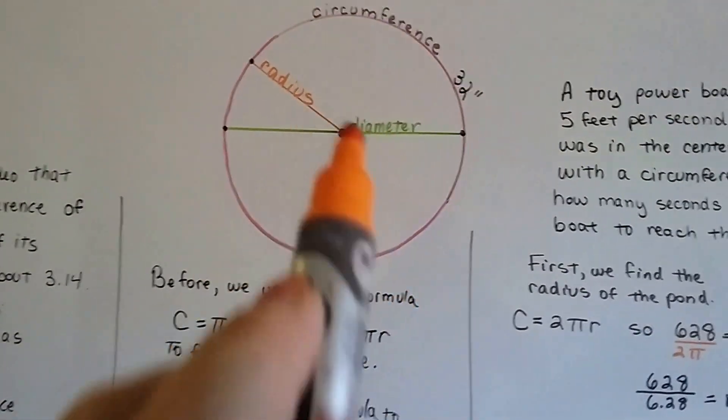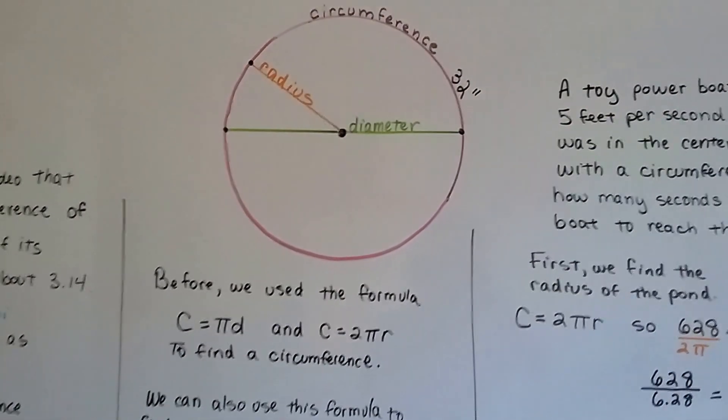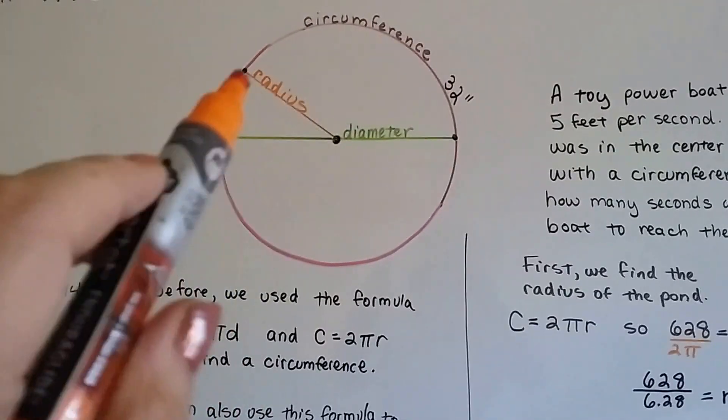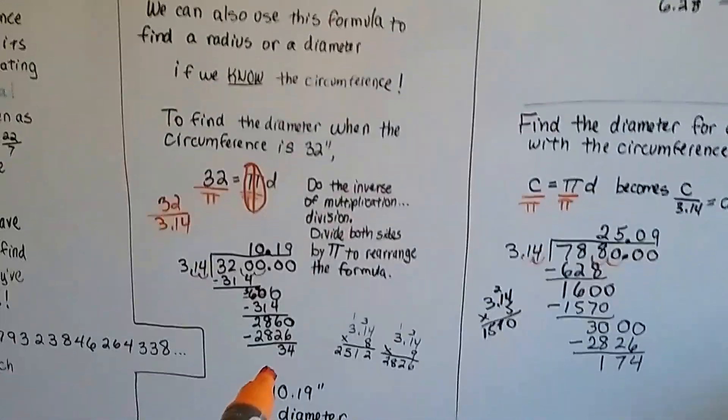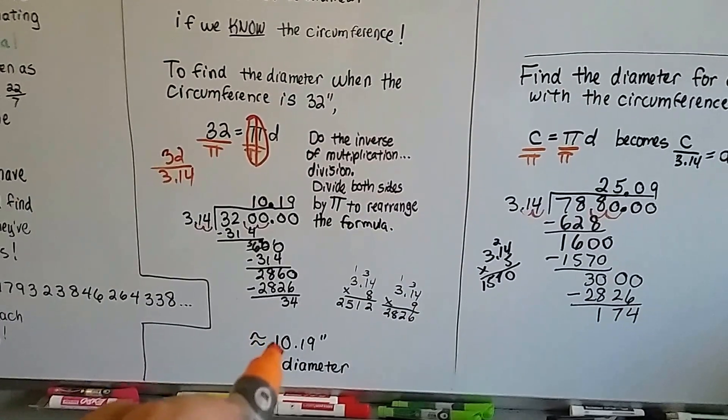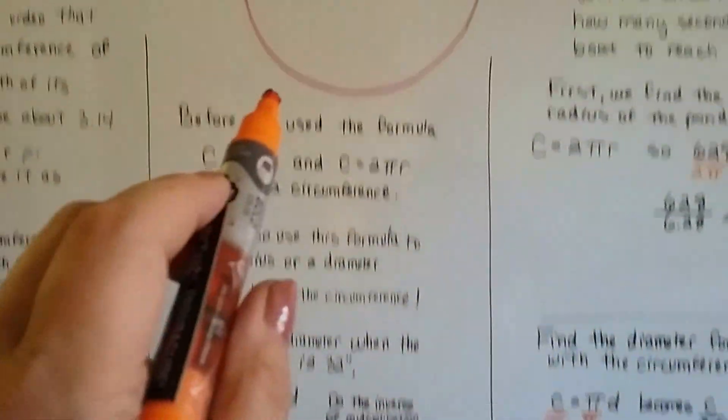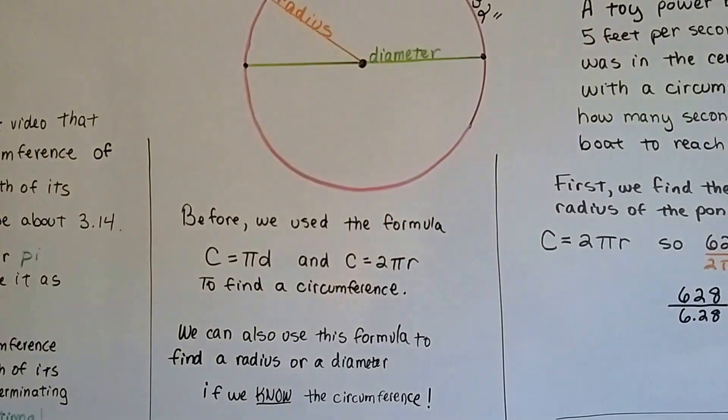So we could say that circle is 10.19 inches in diameter. We would be able to find the radius if we knew that diameter. We could just cut the diameter measure in half. We could divide that by two, and we would have the radius, because the radius is half the diameter.